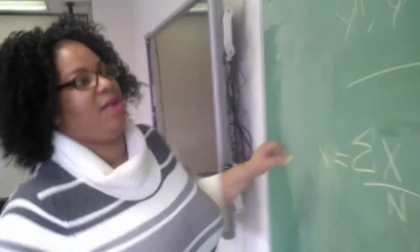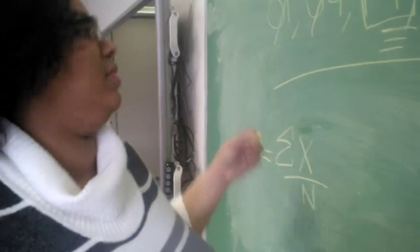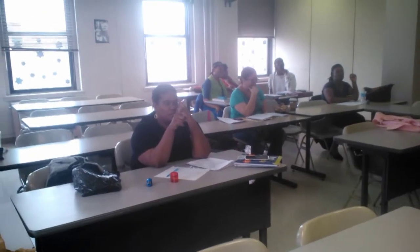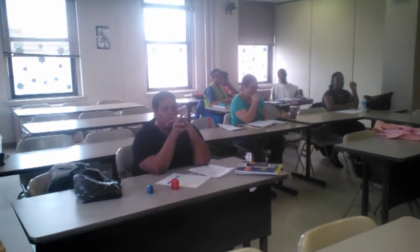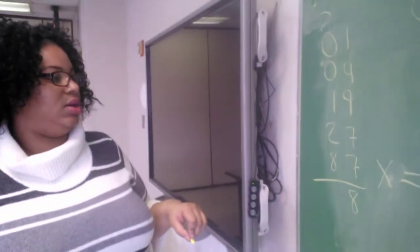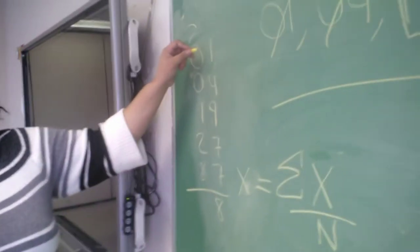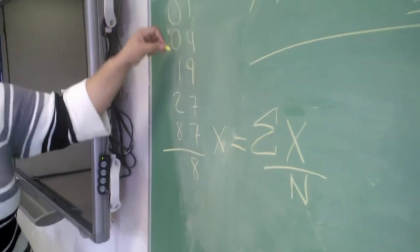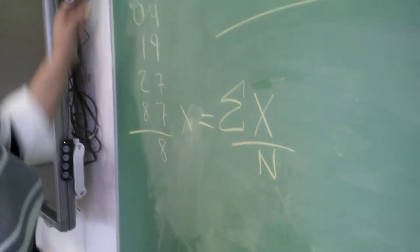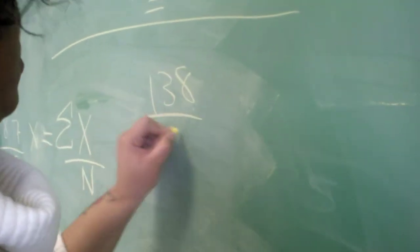Somebody help me out here. The sum is 138. Divide it by 5. So 138 over 5.